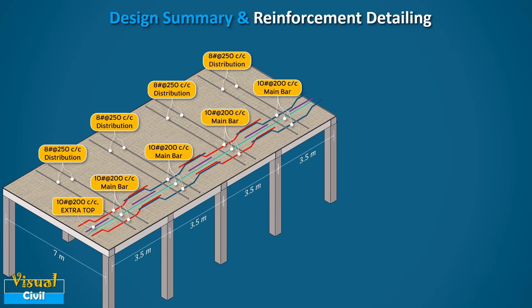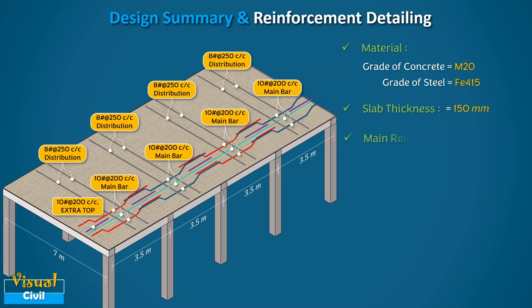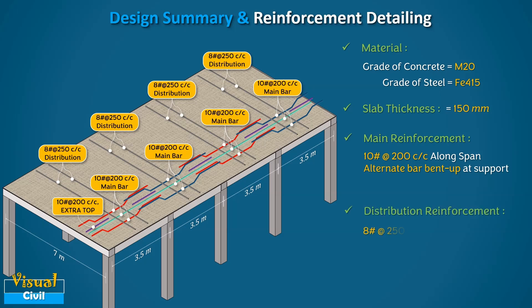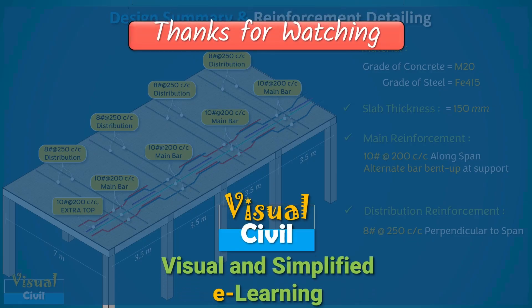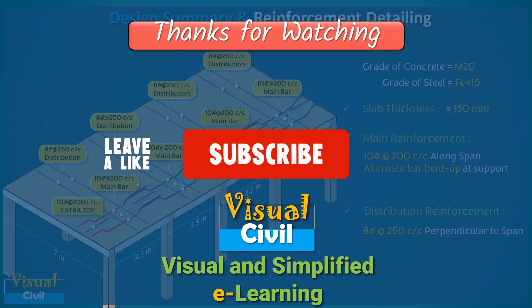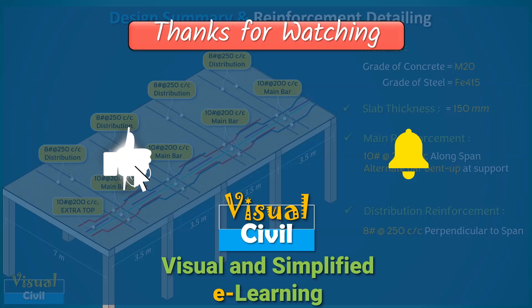Finally, the design summary: A continuous RCC roof slab supported on RCC beams for a classroom is designed with M20 grade concrete and Fe415 steel. Total slab thickness is 150 mm. Main reinforcement for all spans: 10 mm dia bars at 200 mm c/c with alternate bars bent up at support. Distribution reinforcement: 8 mm dia bars at 250 mm c/c. That's a wrap on this Part 2 video. If you found it helpful, give us a thumbs up, subscribe, and drop your queries in the comments below.